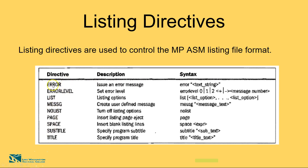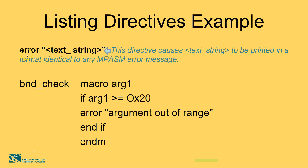Next we have listing directives. These include ERROR, which issues an error message with a text string; ERRORLEVEL, which sets the error level; and LIST. Now let's look at an example using the ERROR listing directive. This directive causes a text string to be printed in a format identical to a microchip assembler error message. The error message will be output in the assembler list file, from 1 to 80 characters.